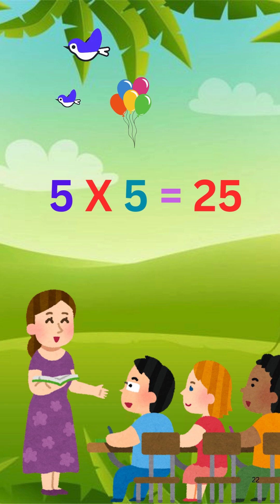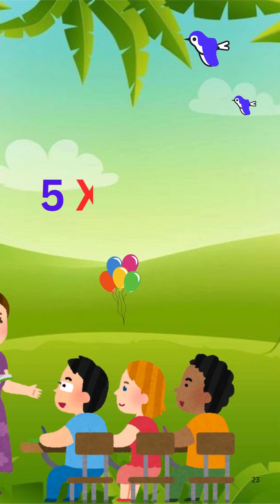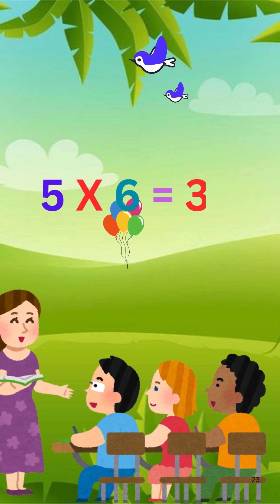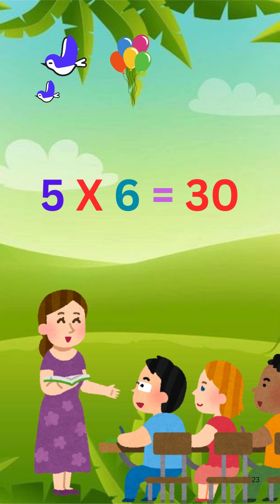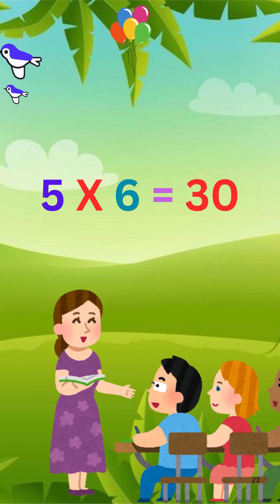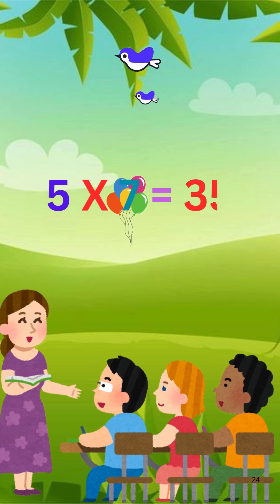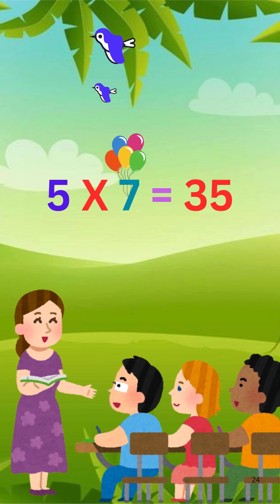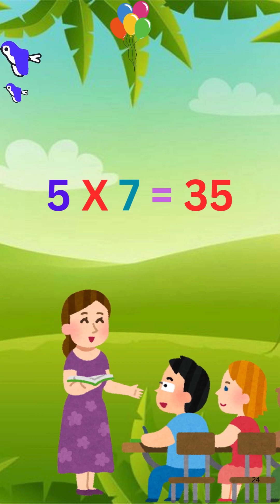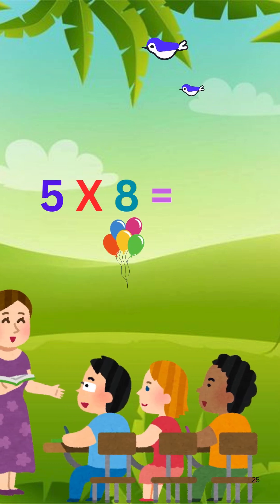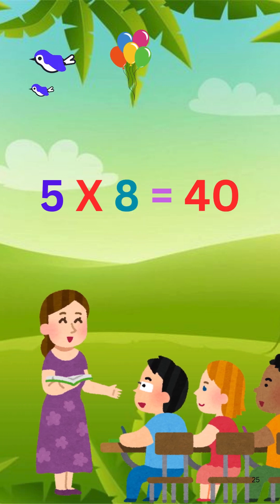Five times five is 25. Five times six is 30. Five times seven is 35. Five times eight is forty.